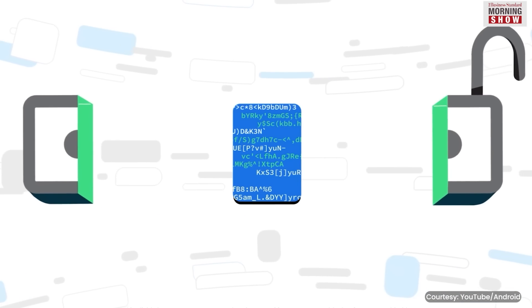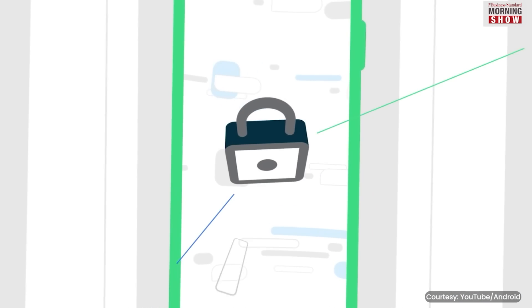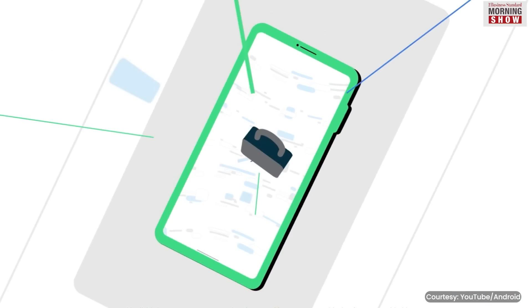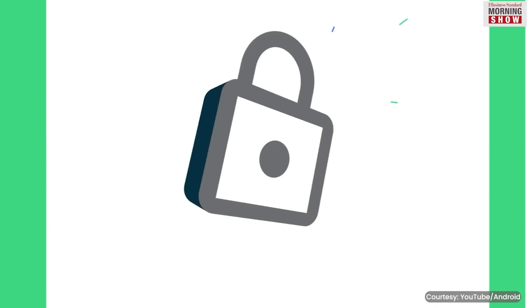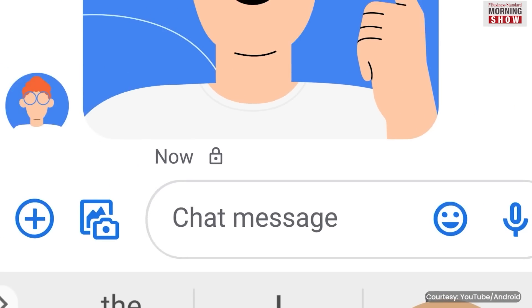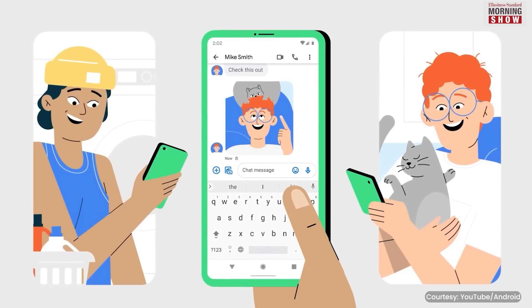The public key is used to encode a message, and this encoded message can only be decoded using its corresponding private key. Simply put, it's a double lock system.